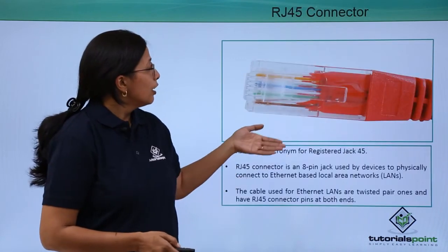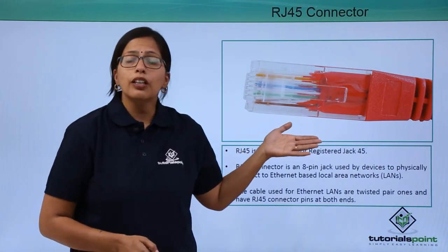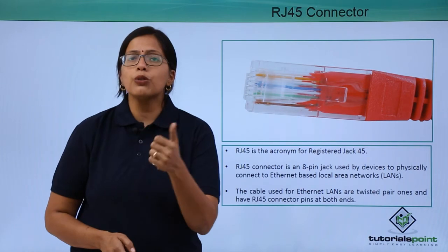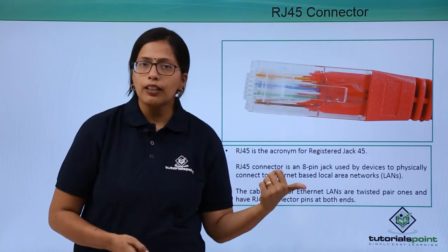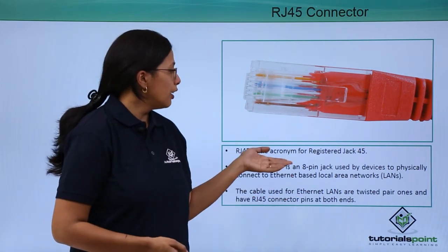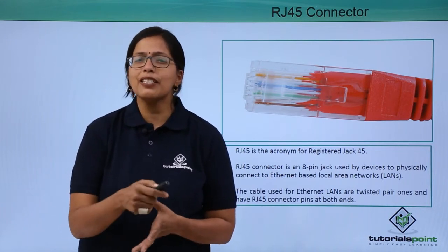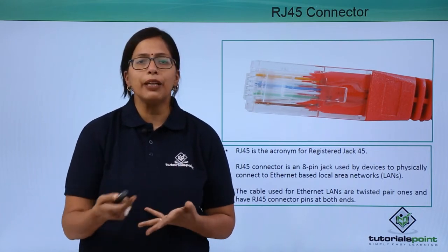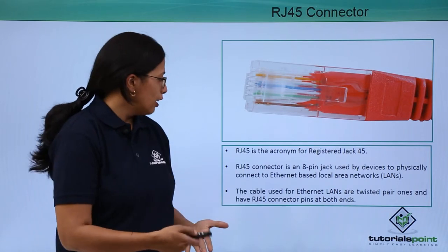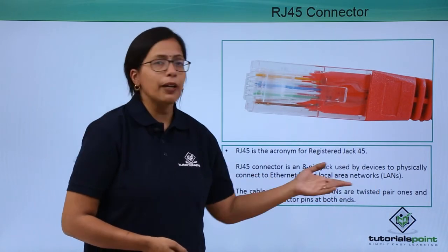Now let's see the RJ45 connector, or the wire that the Ethernet card is using to connect to the LAN. RJ45 is an acronym for Registered Jack 45. It is basically an 8-pin connector that is used to connect to the LAN. The cable used for Ethernet LAN are twisted pair cables.